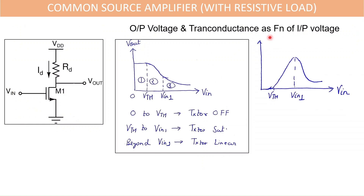This describes the output voltage varying as a function of input voltage. Initially VOUT equals VDD because VIN is less than VTH, so the transistor is OFF and maximum VOUT equals VDD. As VIN increases beyond VTH, VOUT decreases because the drain current increases. From 0 to VTH the transistor is OFF.